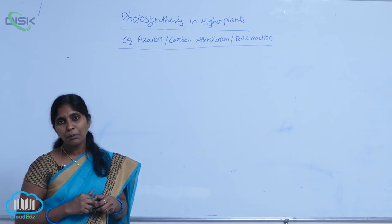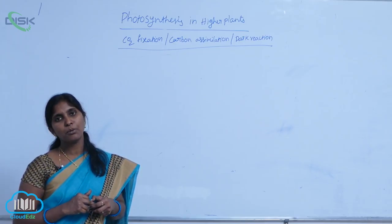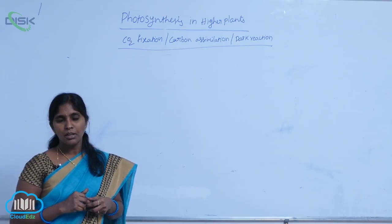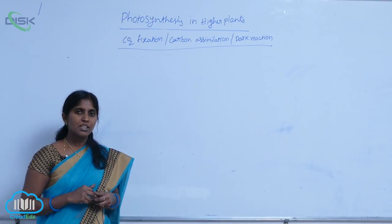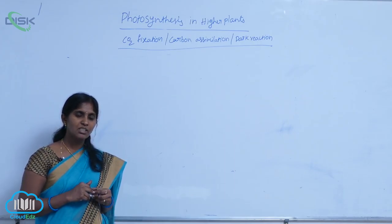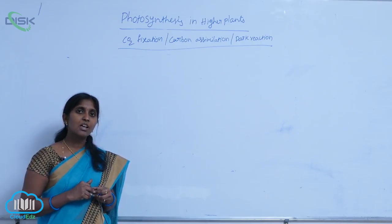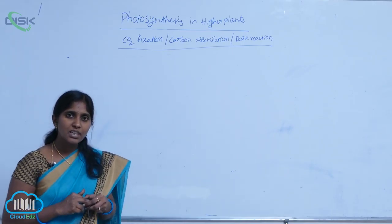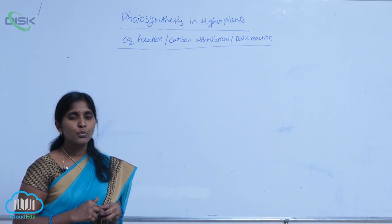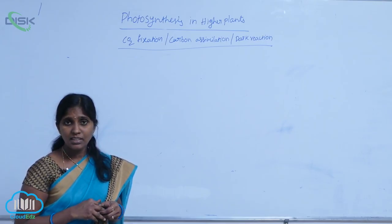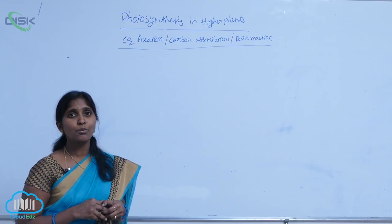In C3 plants, the first stable compound is PGA (phosphoglyceraldehyde). But in some plants, the first stable compound formed is OAA (oxaloacetic acid). Oxaloacetic acid is composed of four carbon molecules, hence the cycle is called the C4 cycle.